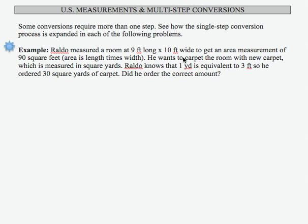So if he puts carpet in the room, carpet is measured usually in square yards. He knows that 1 yard is equivalent to 3 feet, so he divides 90 by 3 and gets 30 and orders 30 square yards of carpet. Does he order the correct amount?